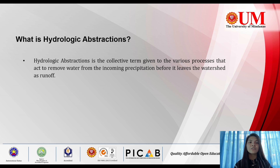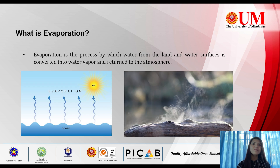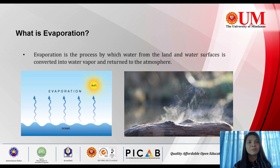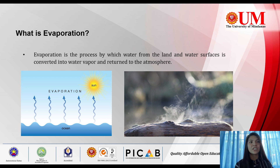Now, let's discuss evaporation first. Evaporation is the process by which water from the land and water surfaces is converted into water vapor and returned to the atmosphere. Evaporation occurs continually whenever the air is unsaturated and temperatures are sufficiently high. When we say unsaturated air, it means the air contains very little amount of water vapor. Evaporation plays a major role in determining the long-term water balance in a watershed, but evaporation is usually insignificant in small watersheds for single storm events.